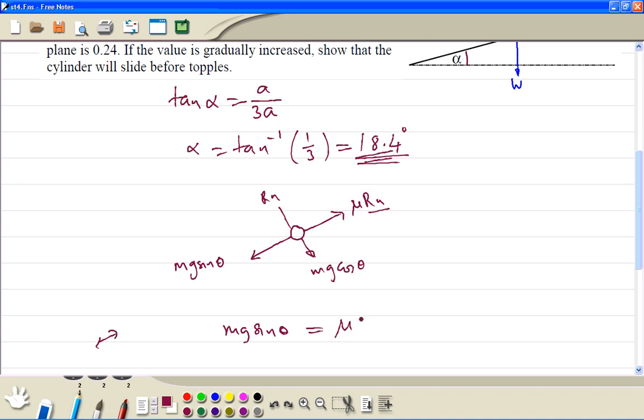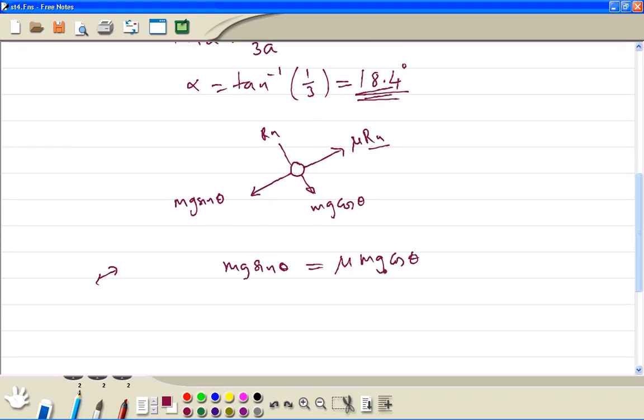By dividing both sides by mg cosine theta, we get tan theta is basically equal to mu.